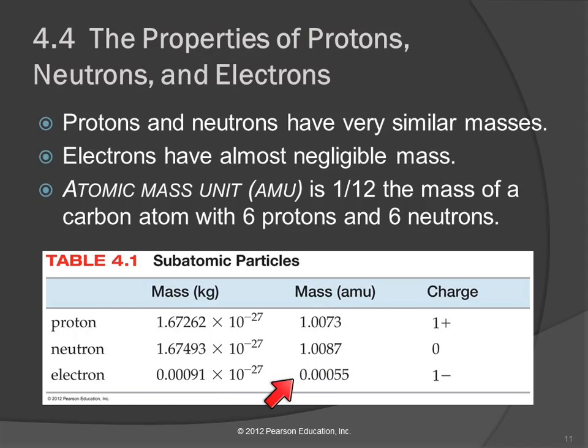Relative to them, the electron is really, really tiny. 0.00055 atomic mass units. So the proton and the neutron are about 1,800 times larger in mass than the electron.